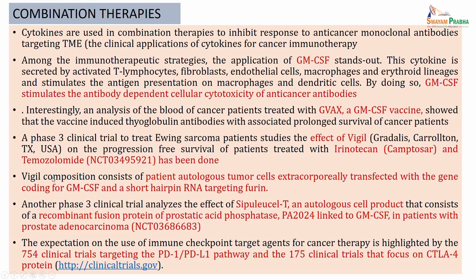What is this Vigil? The Vigil composition consists of patient's autologous tumor cells transfected with a gene coding for GM-CSF and a short hairpin RNA targeting furin. This Vigil has this gene which codes for GM-CSF, and when treated together with irinotecan and temozolomide has shown some progress.